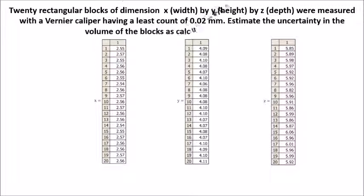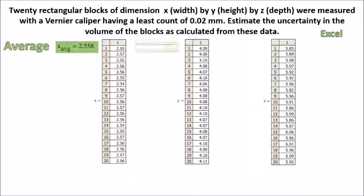Estimate the uncertainty in the volume of the blocks as calculated from this data. First, we calculate the average dimensions for x, y, and z.